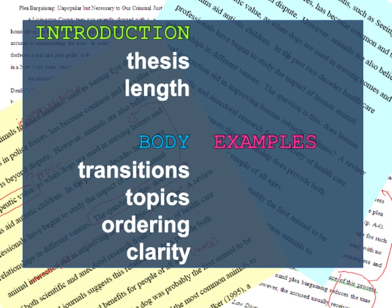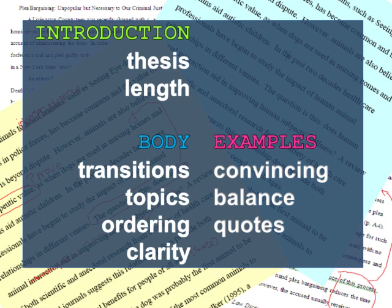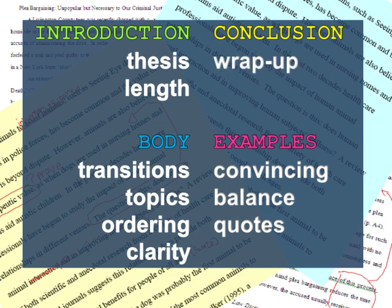Examples: Are your examples and sources reliable and convincing? Are there any holes that might require more research? Is there enough balance between your opinions and the expert opinions from your sources? Make sure there aren't too many direct quotes — your professor wants to hear what you have to say on the subject as well. Does the conclusion sum up your paper without being too repetitive? Once you've revised, go back and revise again.